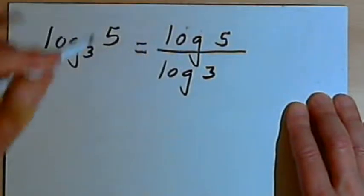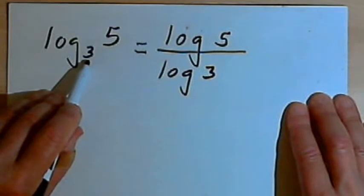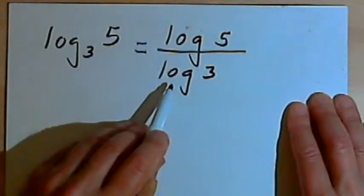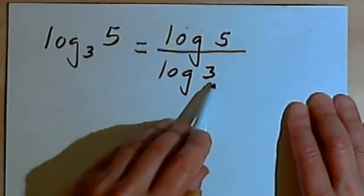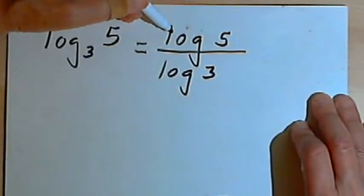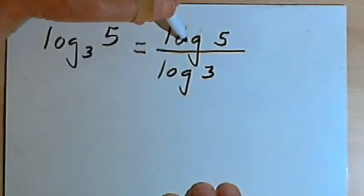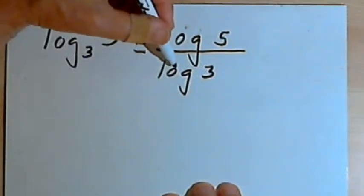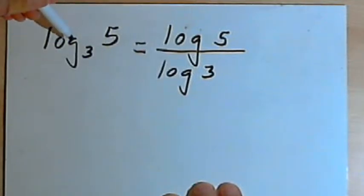For the denominator, I took the base of the original function, that was this 3, and I used that for the denominator to find the log of that base, the log of 3. And now we've got the log of 5 over the log of 3. We could put this into the calculator as the log of 5 divided by the log of 3. And that would give us a decimal approximation for this original logarithm.